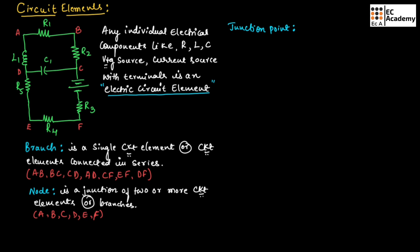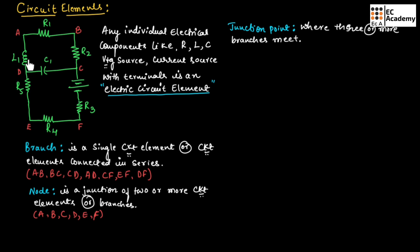Now let us understand junction point. A junction point is a point where three or more branches meet. In this example, D is a junction point where three branches meet. In the same way, C is also a junction point where three branches are meeting. So D and C are the junction points in this circuit.